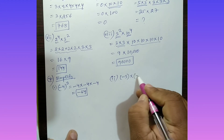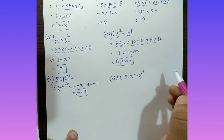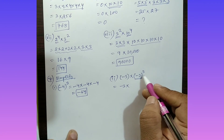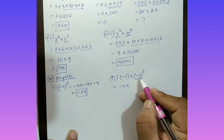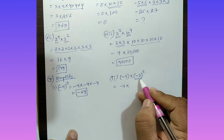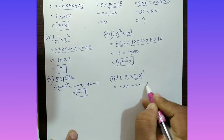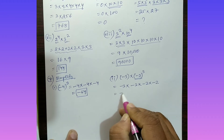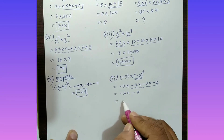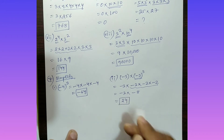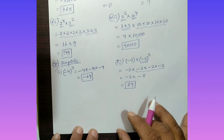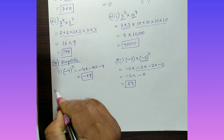Part (ii): Simplify minus 3 multiplied by minus 2 whole to the power 3. Minus 2 to the power 3 means minus 2 is multiplied 3 times: minus 2 into minus 2 into minus 2, which is minus 8. So minus 3 into minus 8 — minus into minus gives plus — the answer is 24.